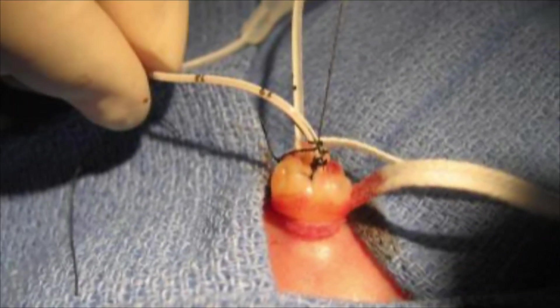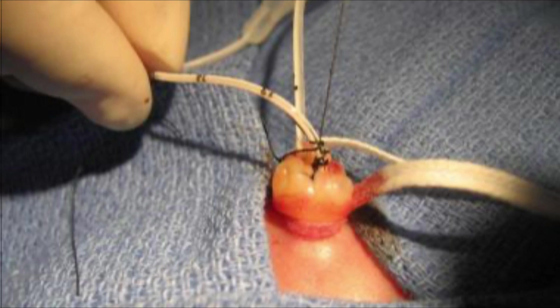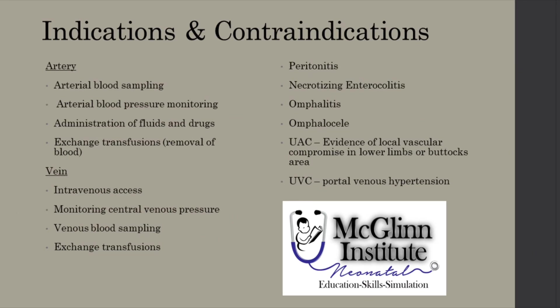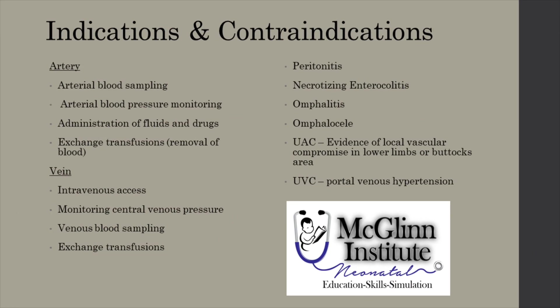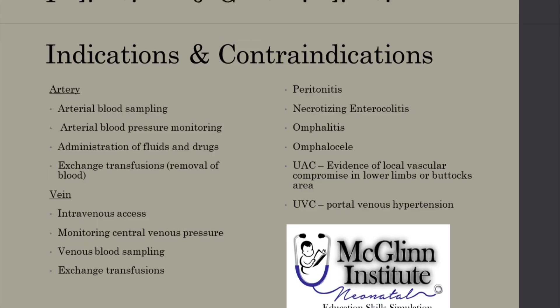Additionally, umbilical venous catheters can be used for venous blood sampling, exchange transfusions, as well as monitoring central venous pressures. There are also contraindications for the use of arterial or venous umbilical catheters.